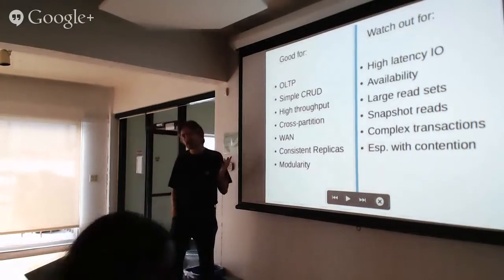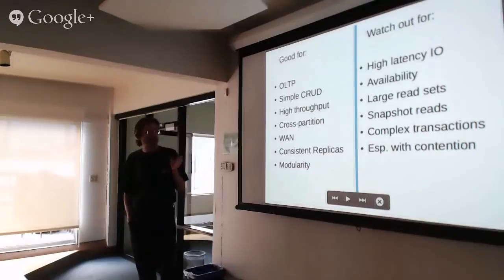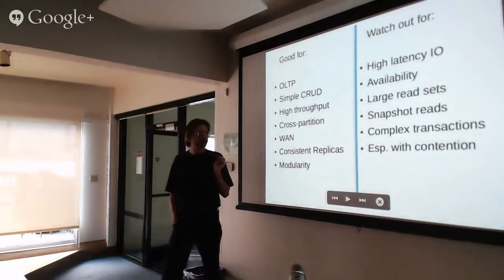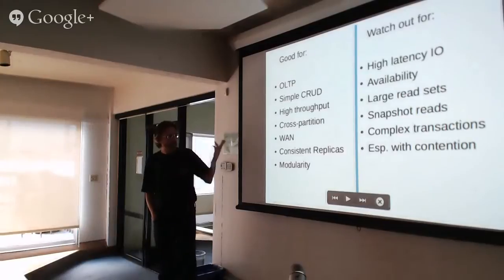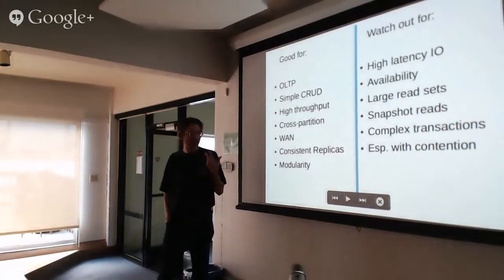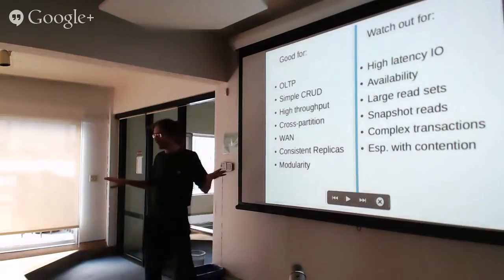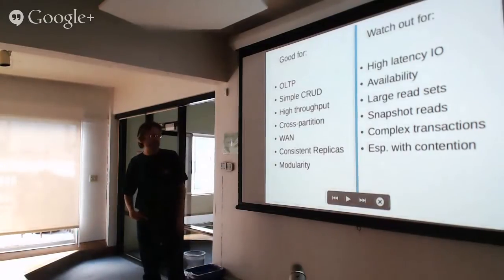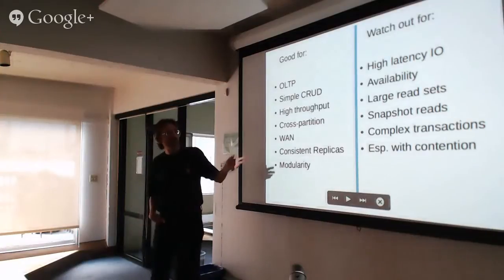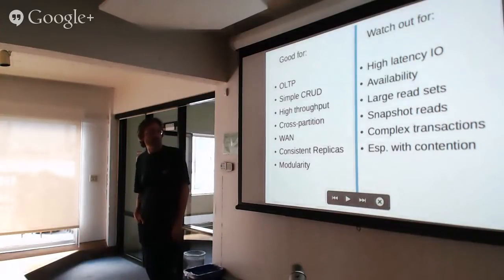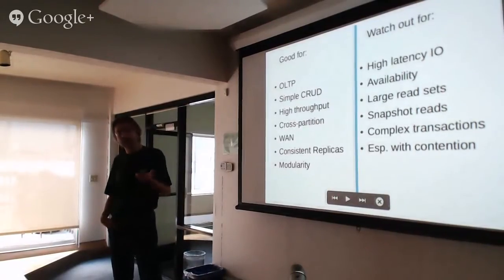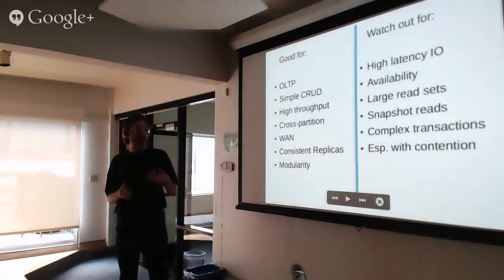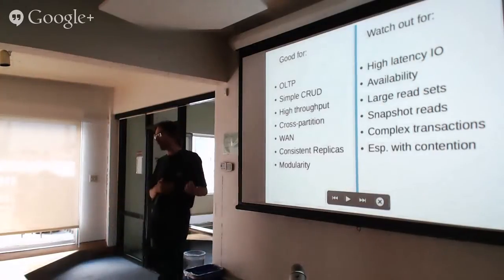Calvin is good for some workloads — like all the peak small transactions, simple CRUD kinds of operations. It's intended for a high-throughput, high-volume system where you want to do transactions across partitions and hopefully across a wide network with a lot of latency between nodes. However, if you have high variability or high latency in your disk IO, you have less flexibility in reordering transactions, which can actually be a bigger problem for Calvin.